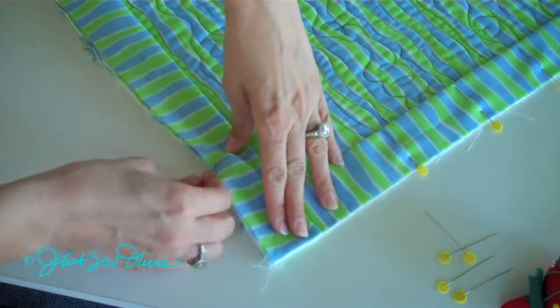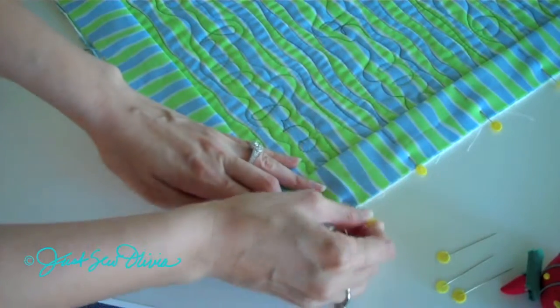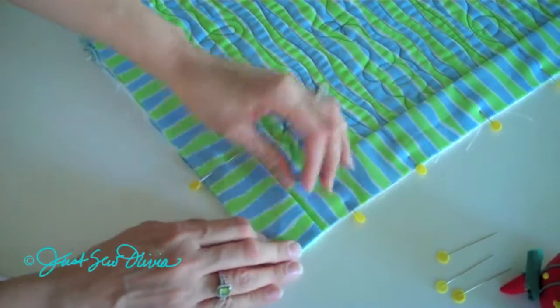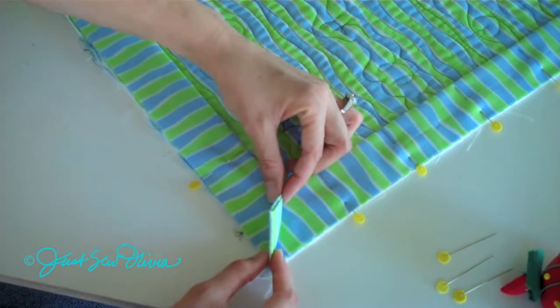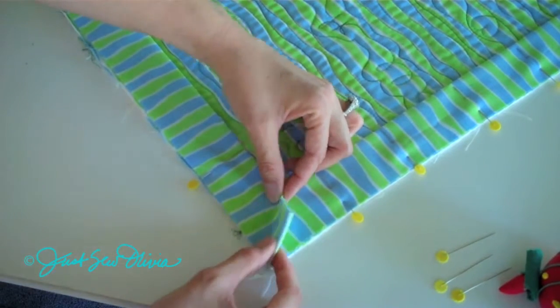Now you're going to pin this down on either side, about 3 inches from the corner, making sure that you hold this in place. If you lift it up, it looks like you've got kind of a double folded triangle there.